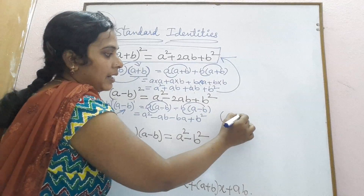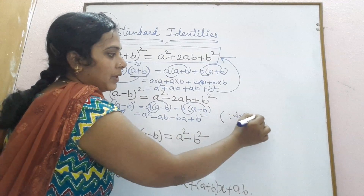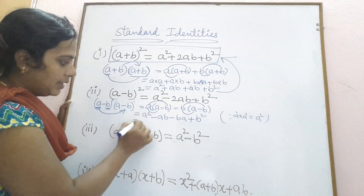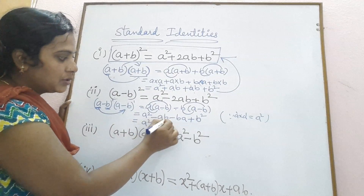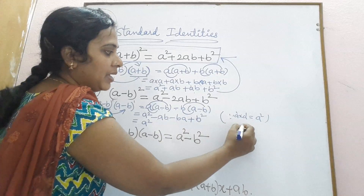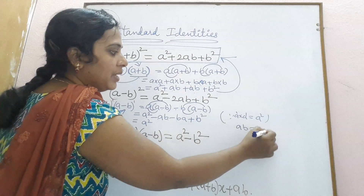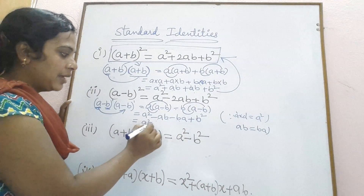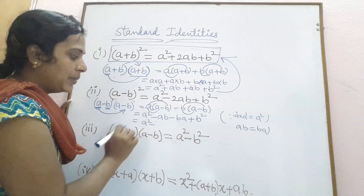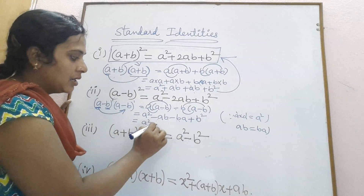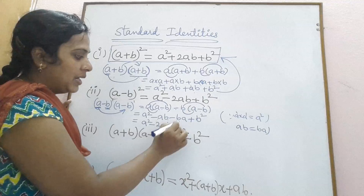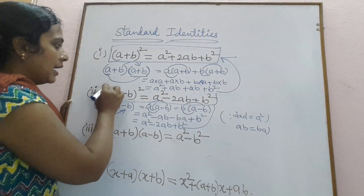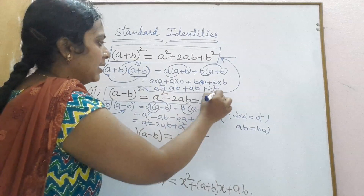Collecting the terms: a squared, then minus ab minus ba. Since ab equals ba and both have negative signs, we add them and apply the same sign: minus 2ab, plus b squared. This gives us a squared minus 2ab plus b squared. That is the second identity in algebraic expressions.